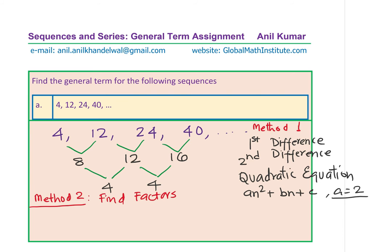So you could write these terms as: 2 times 2, 4 times 3, 6 times 4, and 8 times 5. These numbers — 2, 4, 6, 8 — are even numbers. And then we have these natural numbers 2, 3, 4, 5, and so on. The sequence of even numbers is: 1 times 2, 2 times 2, 3 times 2 — double the position number.